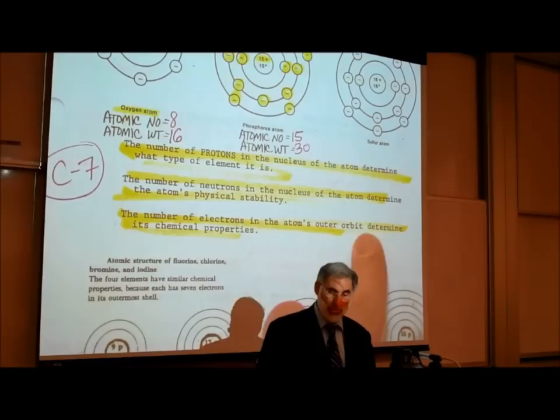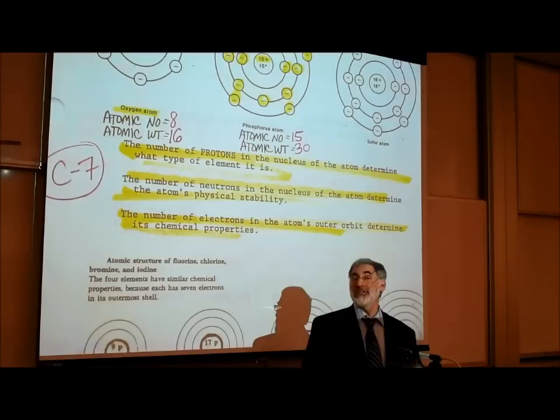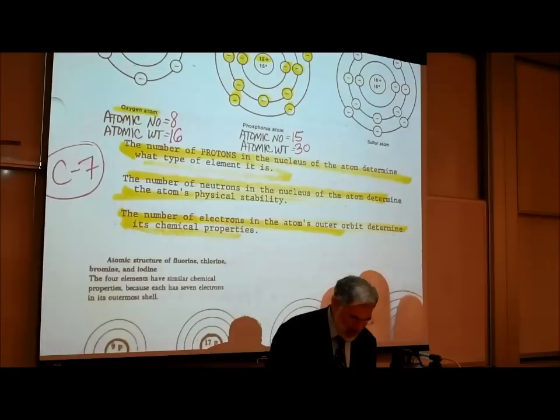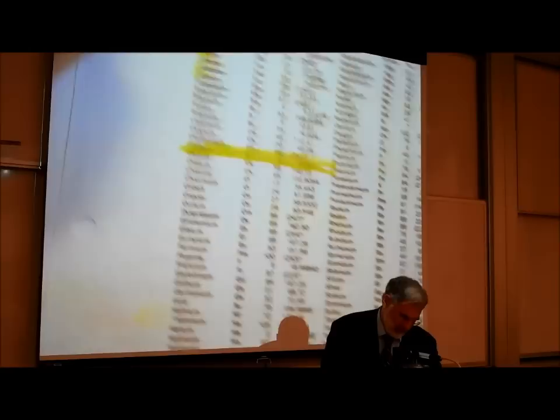Now that we understand that atoms vary in their protons, neutrons, and electrons, let's take a look at the famous periodic chart of the elements. Actually, just before we do, let's look at page C5.